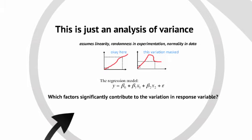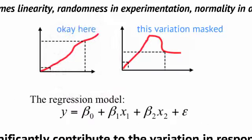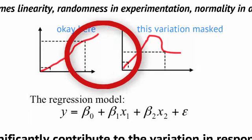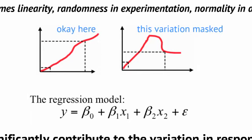This assumes a number of things, including linearity, randomness, and normality in the data. And it works well for linear data, but when there's a variation that's nonlinear, it can be masked.